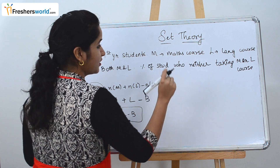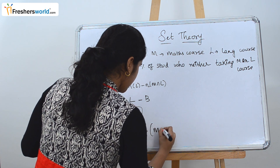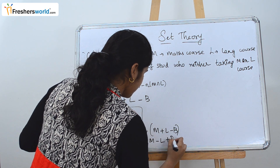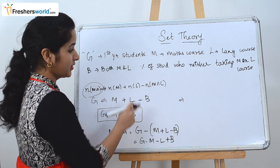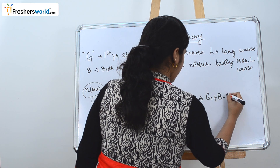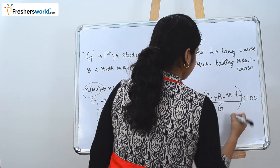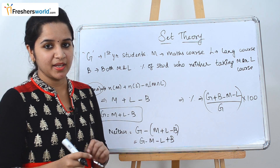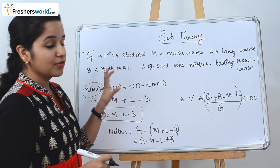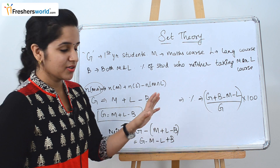They are asking for the percentage of students who take neither course. Neither = G − (M + L − B) = G − M − L + B. The percentage is: (G + B − M − L) / G × 100. We used the same formula but with variables instead of numbers, then applied the percentage formula: given value divided by total, multiplied by 100.